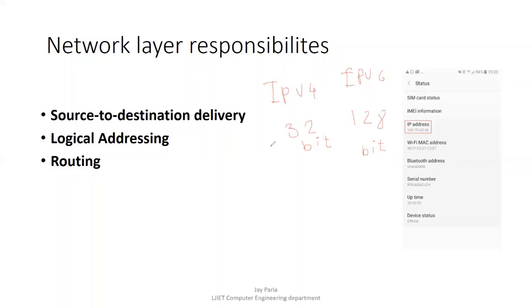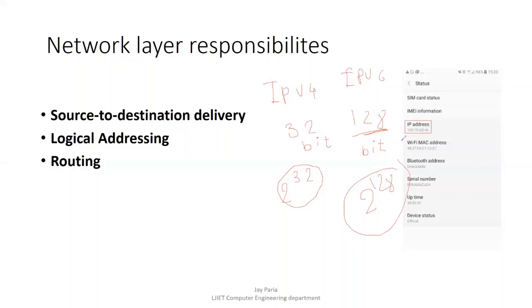IPv4 uses 32 bits, which means 2^32 devices can be connected to the internet. However, the number of devices is increasing rapidly, and due to the growing demand for IP addresses, a new protocol was developed: IPv6. IPv6 uses 128 bits so that 2^128 devices can be connected. That is a very large number, so we will never run out of IP addresses — we have plenty to use.